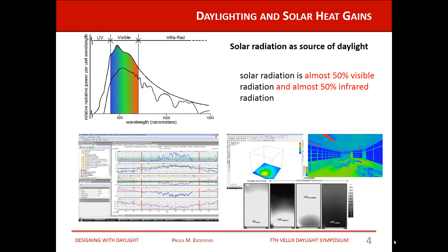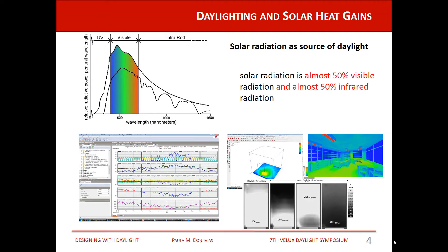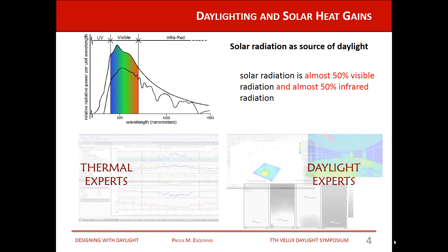The first thing to bear in mind is that solar radiation is almost 50% visible radiation and almost 50% thermal radiation. Both aspects are separately studied by thermal experts and daylight experts. As they present results in different ways, we want to ask how we can integrate them.